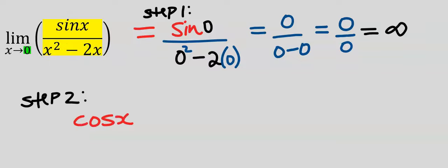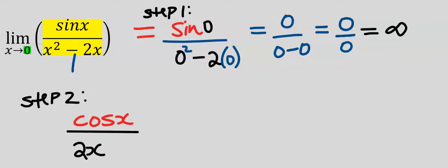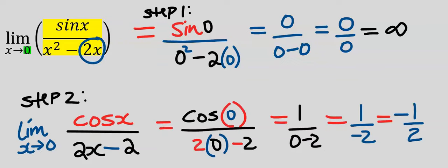Next, there is a minus sign. We differentiate 2x, and the answer is 2. By taking the limit as x tends to 0, we get minus 1 over 2. This is the concept of L'Hôpital's rule.